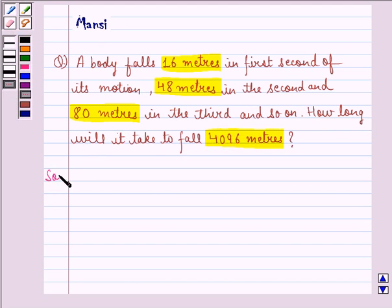So let us see the solution to this question. First of all we see that here we have an arithmetic progression of these distances. They are 16, 48, 80 and so on. So this is an AP.